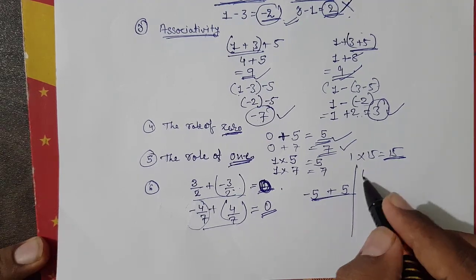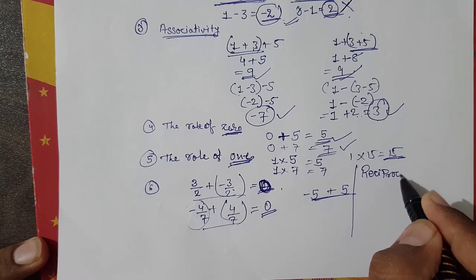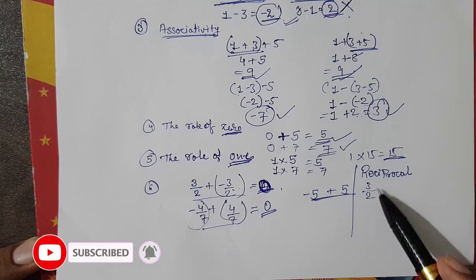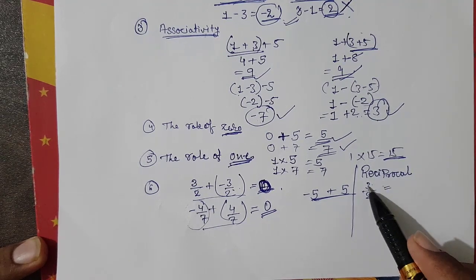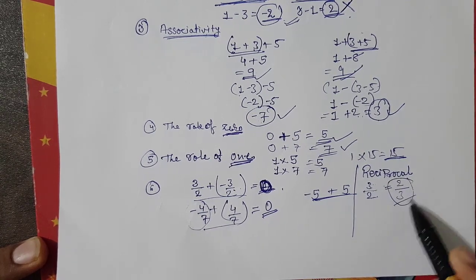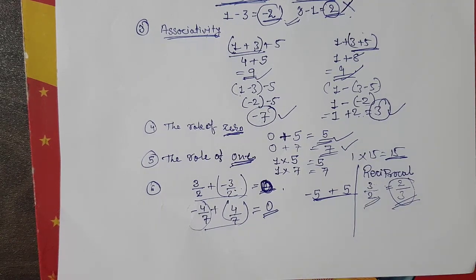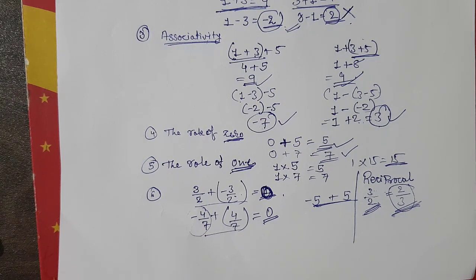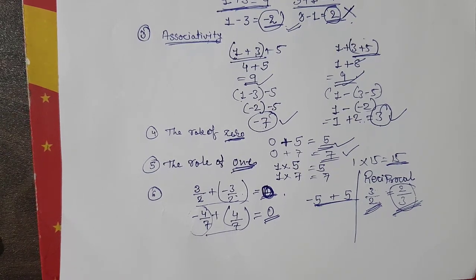The last concept is reciprocal. If you have 3 by 2 and you interchange the numerator and denominator, you get 2 by 3 — this is the reciprocal of 3 by 2. So the reciprocal is found by flipping the fraction. This covers the complete introduction to Chapter 1, Class 8 Mathematics: Rational Numbers. In the next video, we will solve Exercise 1.1.